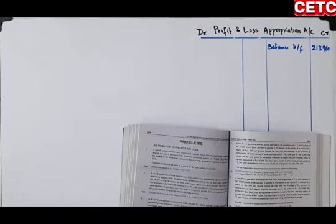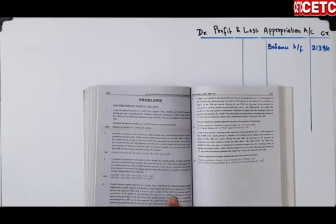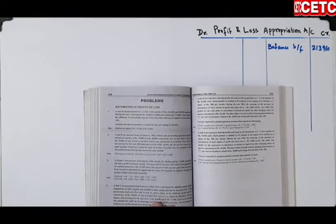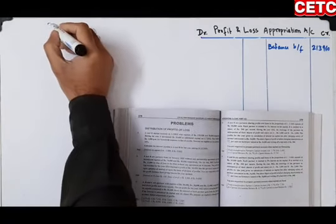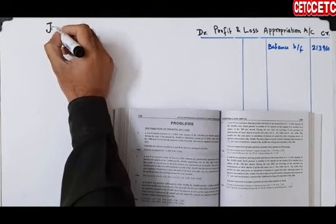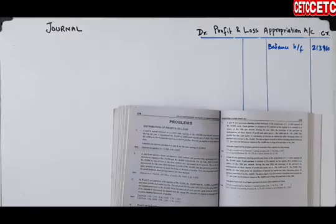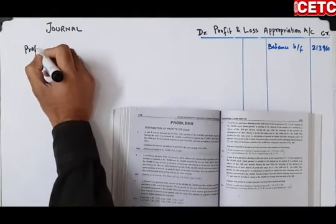A ko salary milegi 6,000 per month — mahaana. Aur B ko commission milega 30,000. Ab hota kya hai — jo bhi salary milegi partners ko ya commission milega, woh unko cash mein nahi diya jaata. Woh unke capital mein jama kar diya jaata hai. Ab kaisa jama karenge — journal entry pass karenge.